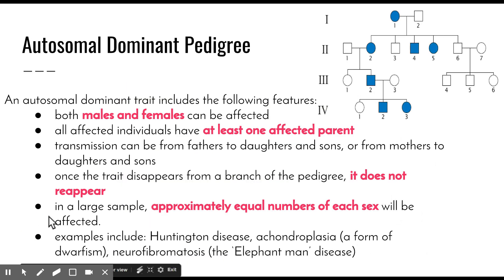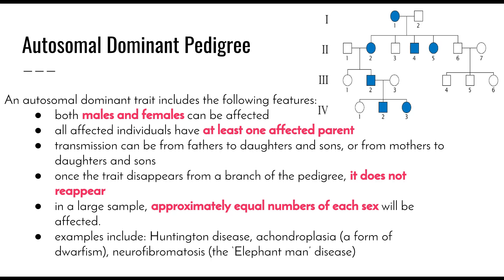Pedigrees can tell us a lot about a particular trait. An autosomal dominant trait is carried on one of the 22 chromosomes that don't determine sex — not on the X or Y. The dominant allele overshadows the recessive allele. Features of autosomal dominant traits include: both males and females can have it; all affected individuals have at least one affected parent; and transmission can be from fathers to daughters and sons, or from mothers to daughters and sons.